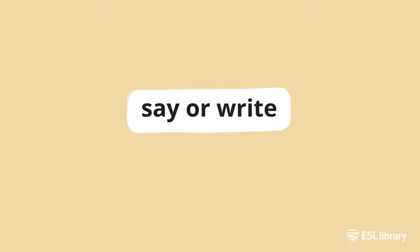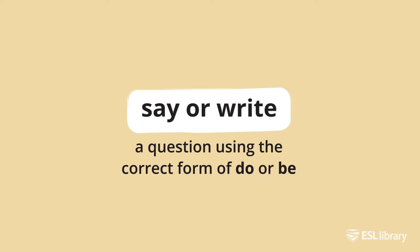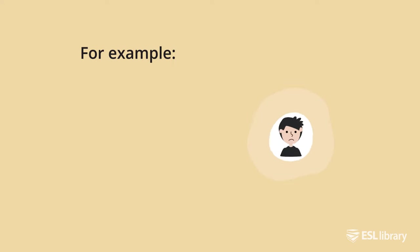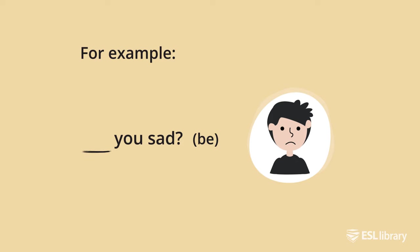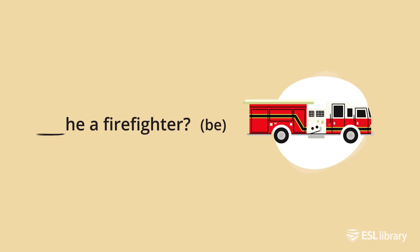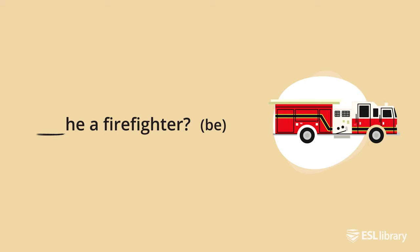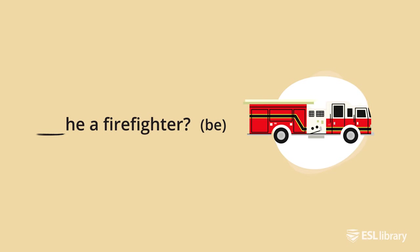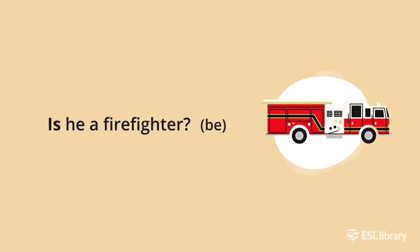Look at the picture and the sentence. Say or write a question using the correct form of 'do' or 'be.' For example: 'Are you sad?' Now you try. 'Is he a firefighter?'